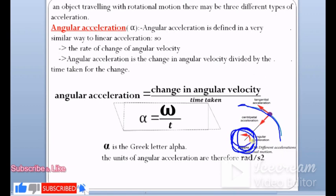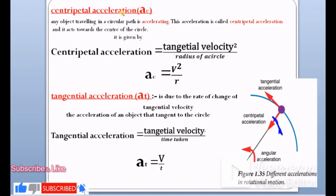Centripetal acceleration acts towards the center of the circle. The centripetal acceleration acts towards the center of the circle and it is given by tangential velocity squared over radius of the circle.